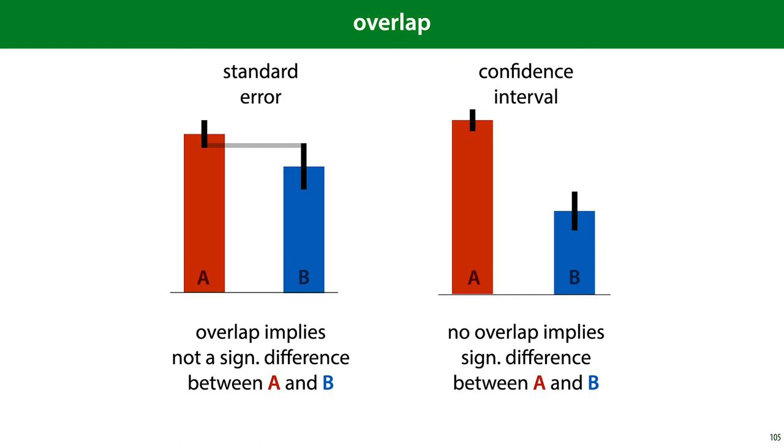So if we have a standard error error bar and we don't see an overlap, we may not conclude that there is a statistically significant difference. And if we have a confidence interval and we do see an overlap, we may not conclude that there is no statistically significant difference.